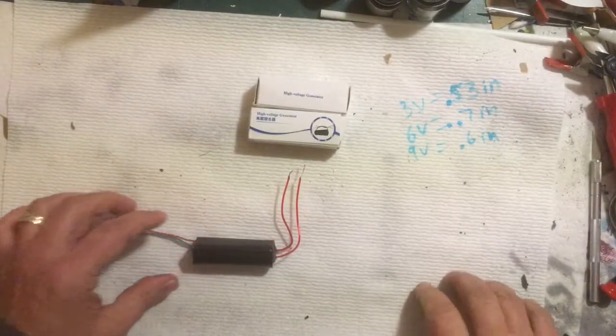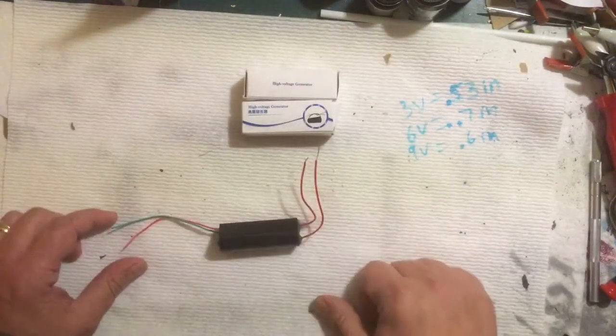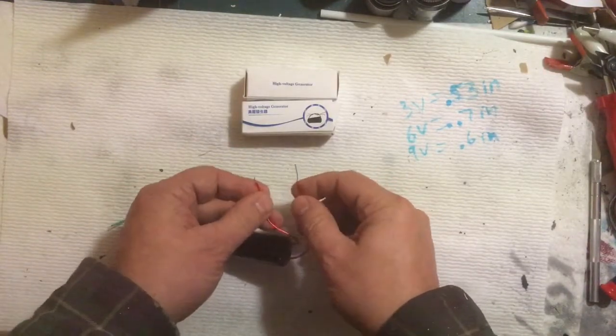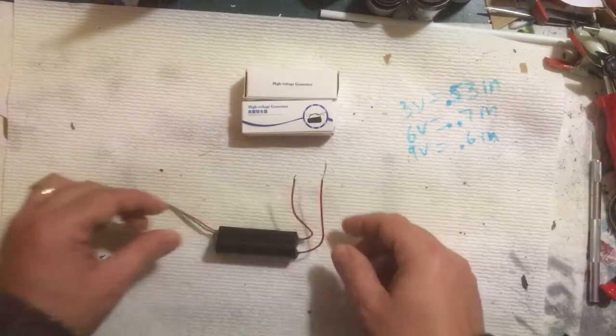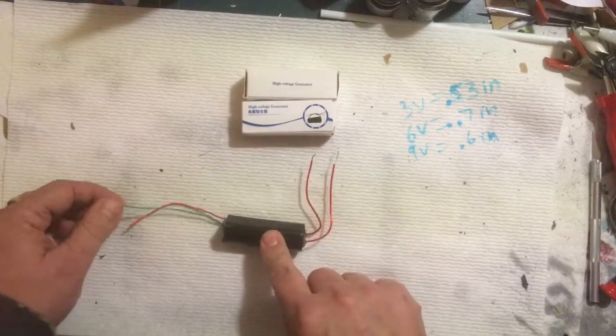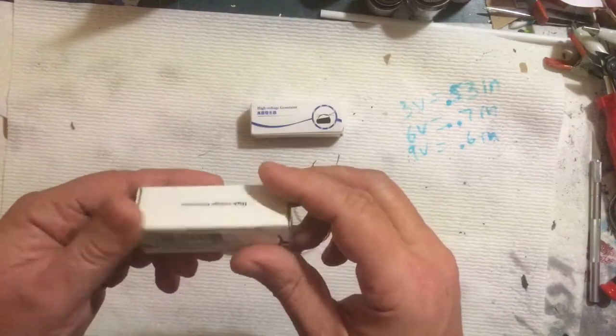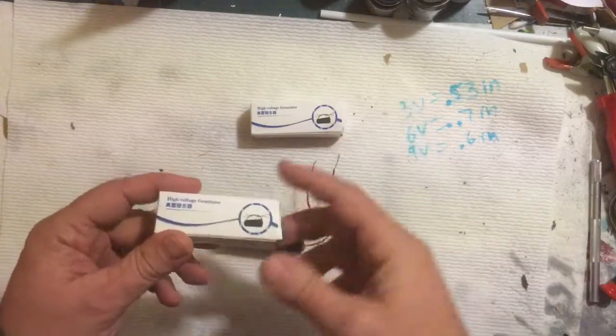All right. Actually, I'm kind of getting ahead of myself because the first thing I did was I set this up so I could spread those apart and put them together. Because these are rated to run off of three to six volts. And actually it doesn't say it on the box, but when you look at them on eBay it says three to six to forty thousand volts.